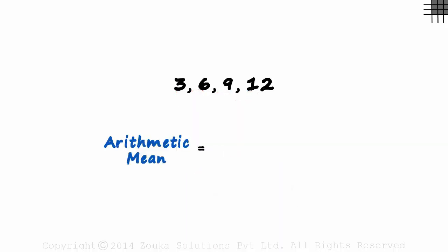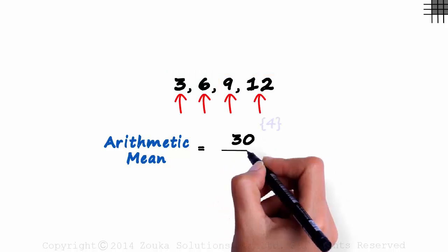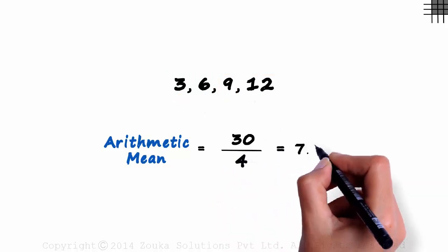The sum of terms is 9 plus 9, 18, plus 12 which is 30, and the number of terms is 4. This gives us 7.5.